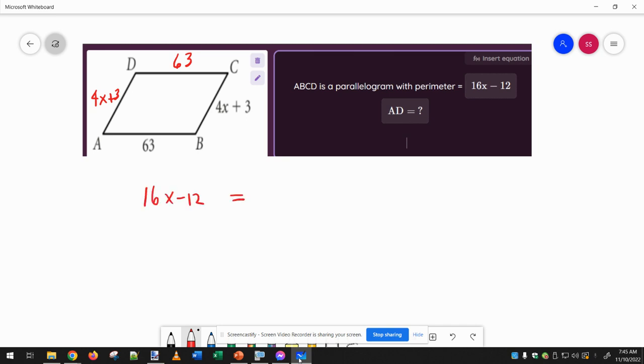So I set that equal to, and now I add up 4x plus 4x is 8x, and then I add 63 plus 63 plus 3 plus 3. So if I do that on my calculator, I get 132. So now I have all four sides added up over here on the right, equaling the perimeter that they gave us here on the left.